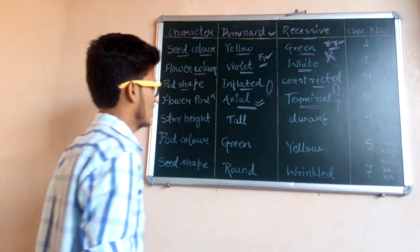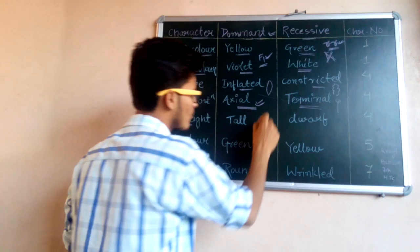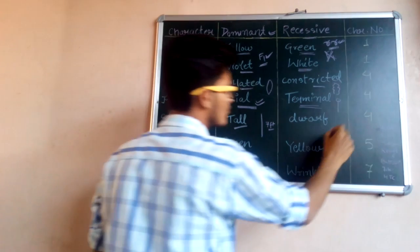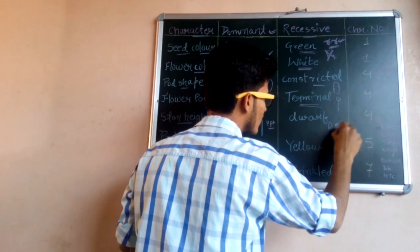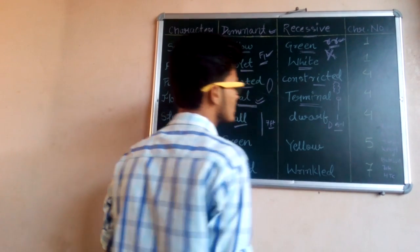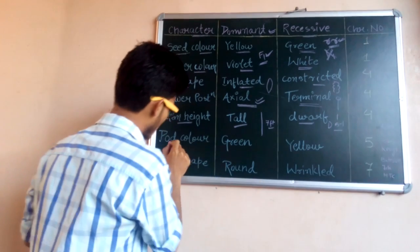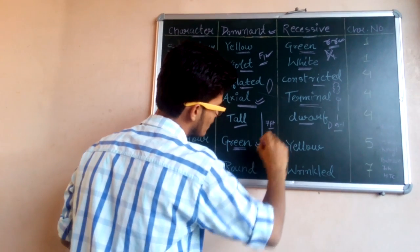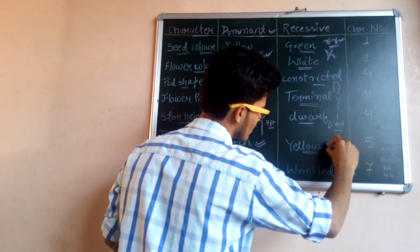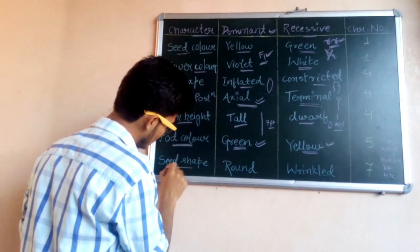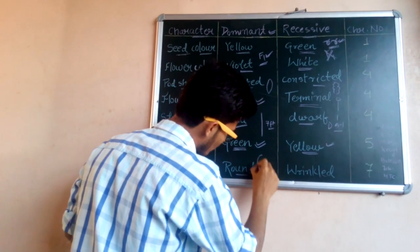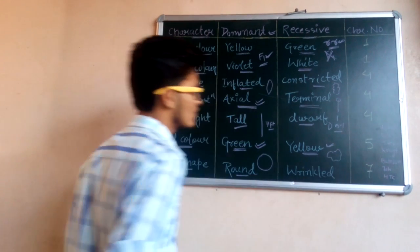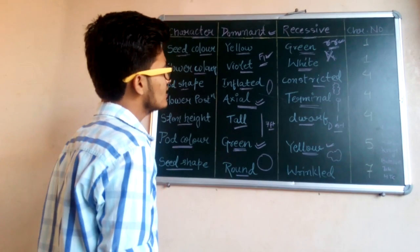For stem height, if the plant is tall up to 7 feet then it is the dominant character, but if it is 0.5 to 1 foot tall then it is known as dwarf, which is the recessive trait. For pod color, green is the dominant trait and yellow is the recessive trait. Finally, for seed shape, round seeds are the dominant ones and wrinkled seeds are the recessive ones. This data is given in the NCERT book.